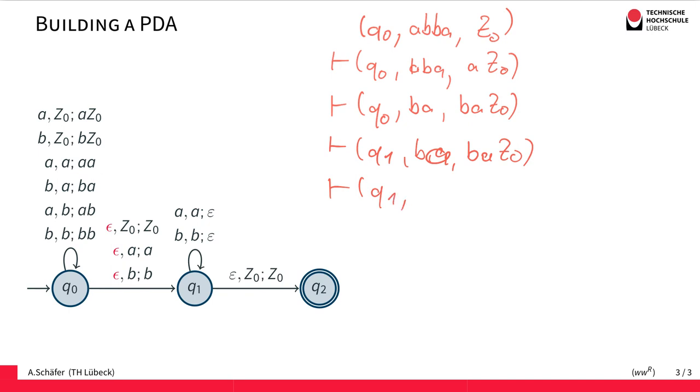And then we start matching. So we match the B against the stack top. So A is remaining. We have an A and Z0, and then we match the A and Z0 on the stack.